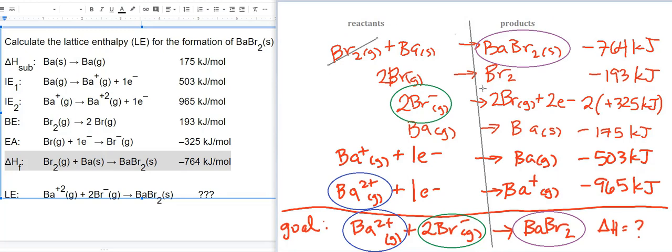I'm going to start crossing stuff off. Br2 gas cancels with Br2 gas. Ba solid cancels with Ba solid. 2 Br gas cancels with 2 Br gas. 2 electrons cancel with 2 electrons. Barium gas cancels with barium gas. And barium plus 1 ion cancels with barium plus 1 ion. All the intermediates and things that don't appear in the goal reaction have cancelled out.